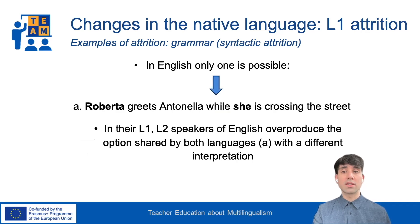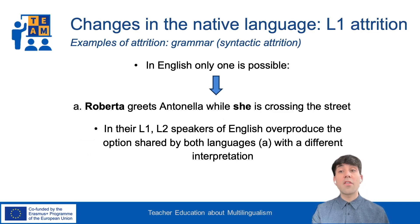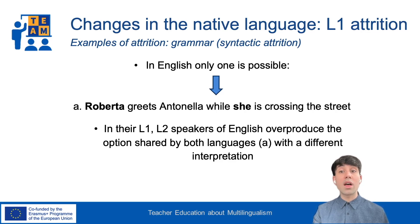In English, by contrast, only one option is available: 'Roberta greets Antonella while she is crossing the street,' where the pronoun is usually interpreted as referring to the subject of the previous clause — that would be Roberta. In this context, Italian speakers of English have been found to overproduce the option shared by both languages in Italian, that is sentence A, when Italian monolinguals would rather drop the pronoun 'lei' and produce sentence B — 'Roberta saluta Antonella mentre attraversa la strada.'